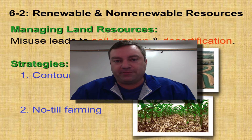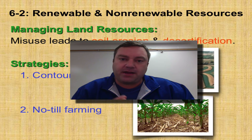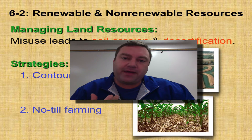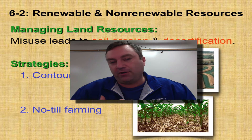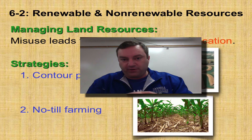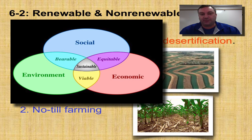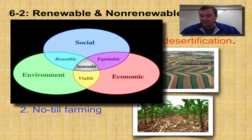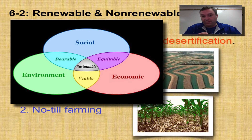Welcome to episode number two from chapter six. In this episode, we're going to talk about how we can manage land resources and forest resources. This is all part of our umbrella of sustainable development. Sustainable development must be equitable socially and economically, and it also needs to be good for the environment. If we can get all three of those to match, then you're in sustainable development.